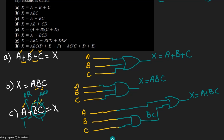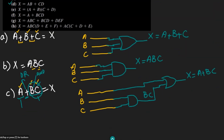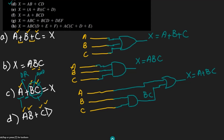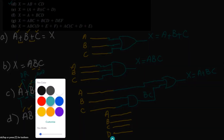Similarly, for part D — this is the last part of this video; parts e, f, g, and h will be in the next video. In part D we have ab + cd = x. The number of inputs is four: a, b, c, and d. Let me draw all four inputs here.